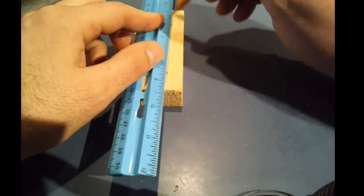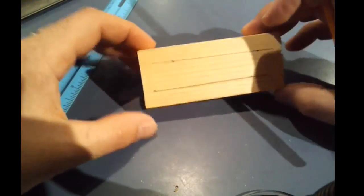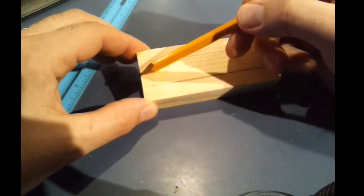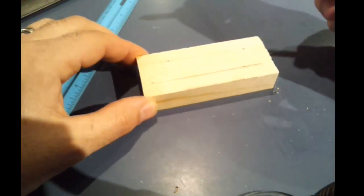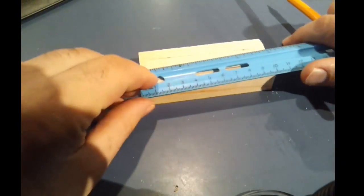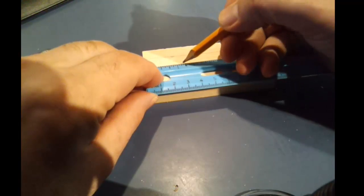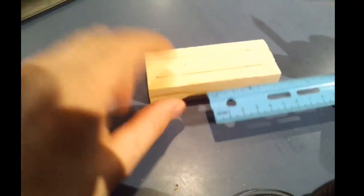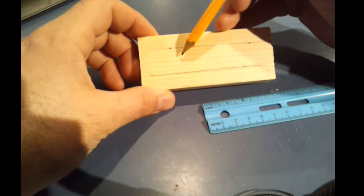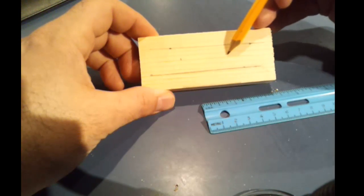The next part is measuring from one edge up one and three sixteenths. From that mark I measured one and three sixteenths from here to here. From here up I'm going to measure one and five eighths.